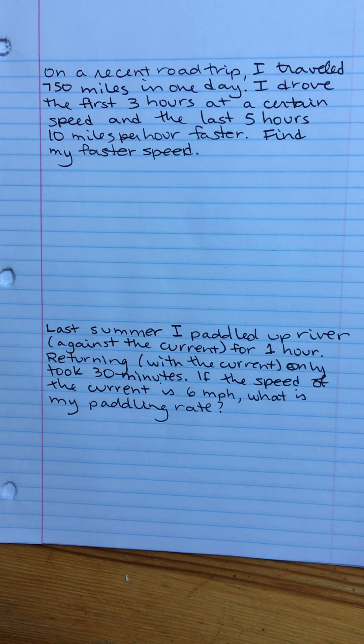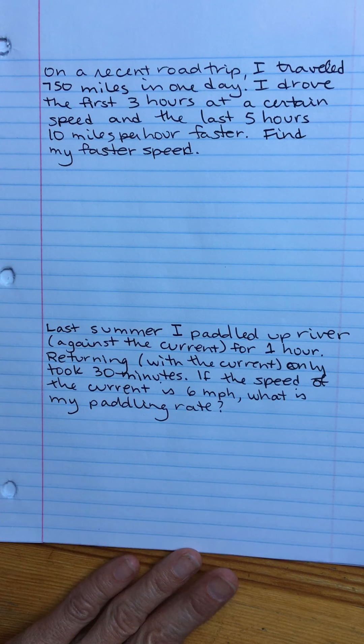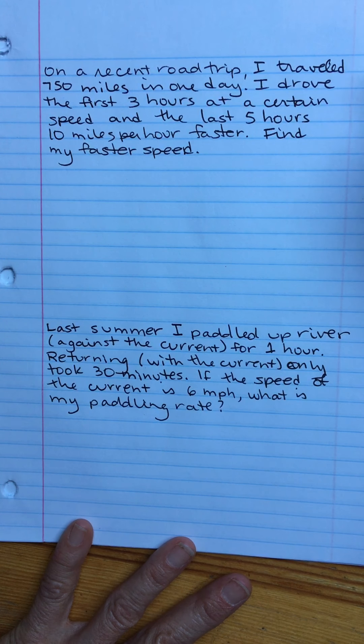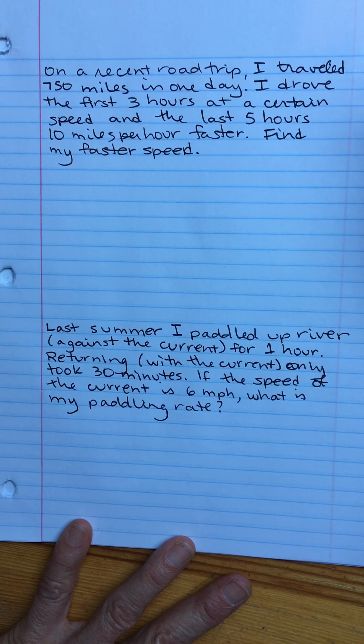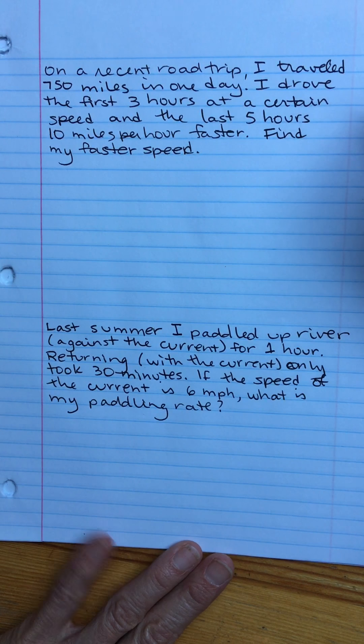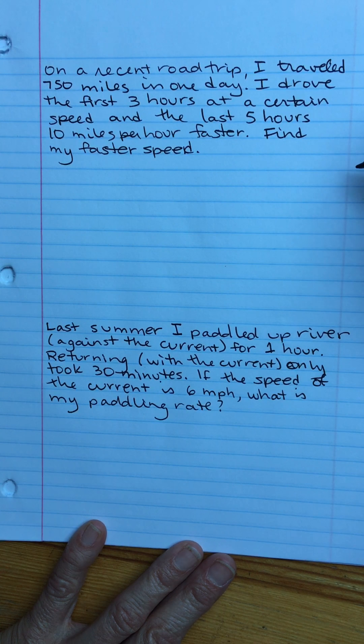Let's do a couple more word problems here. These are going to be those distance equals rate times time types of questions. On a recent road trip I traveled 750 miles in one day. I drove the first three hours at a certain speed and the last five hours 10 miles per hour faster. Find my faster speed.